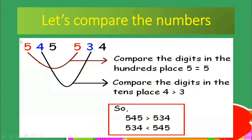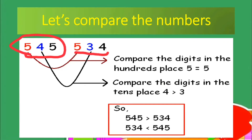Let's try higher, bigger numbers — three-digit numbers. We have 545 as our first number and 534 as our second number. They have the same digit on the hundreds place: five and five. We can't tell the difference there, so we look at the tens digits: four and three. Four is bigger than three, so 545 is greater than 534.